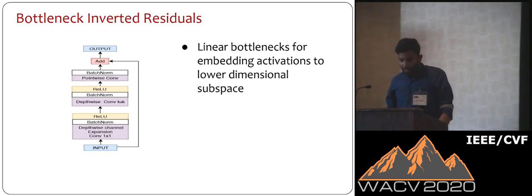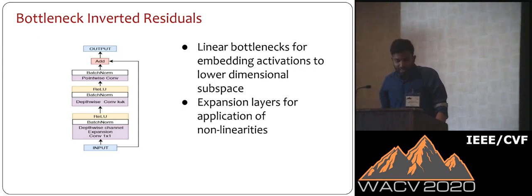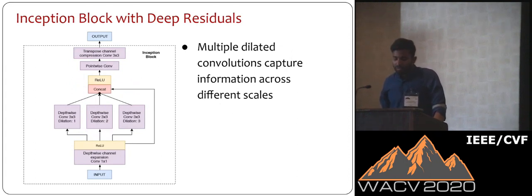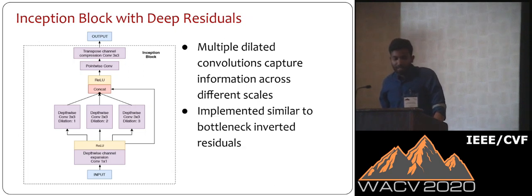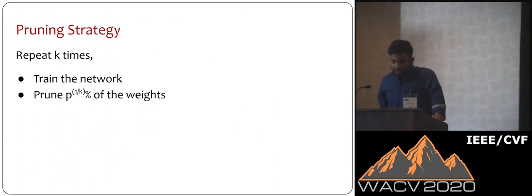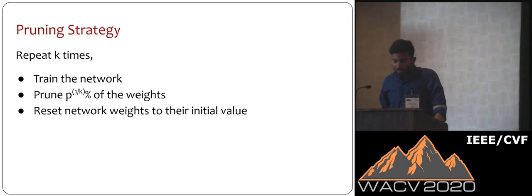Next we have the bottleneck inverted residuals. The linear bottlenecks are used to embed the activations to a lower-dimensional subspace, providing hardware-efficient design with gains in terms of power and area. The expansion layers are for the application of nonlinearities, and we use ReLU nonlinearities as they are much more power-friendly. We also use dilated convolutions in the inception block to capture information across different scales. We use an iterative pruning strategy to induce network sparsity, which ensures lesser memory requirement and improvement in terms of power usage.